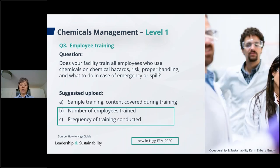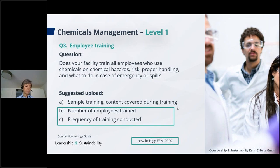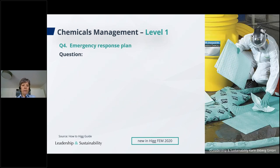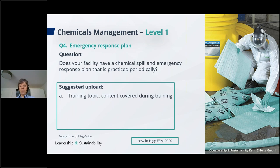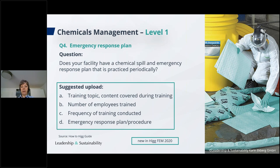Question three is about employees and workers: does your facility train all employees who use chemicals on chemical hazards, risks, proper handling, and what to do in case of an emergency or spill? Suggested uploads include a sample training, content covered during training, number of employees trained, and frequency of training. Question four is about the emergency response plan: does your facility have a chemical spill and emergency response plan that is practiced periodically? Suggested uploads include training topic, content, number of employees trained, frequency of training, and the emergency response plan and procedure.